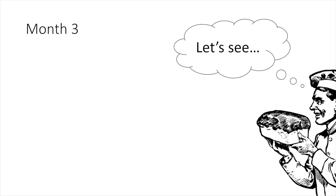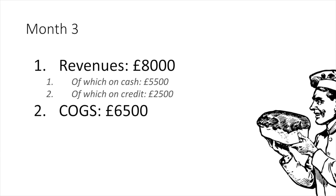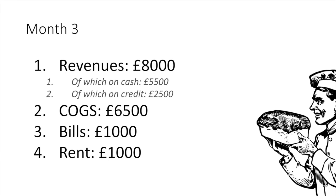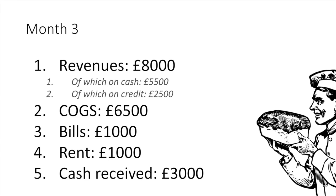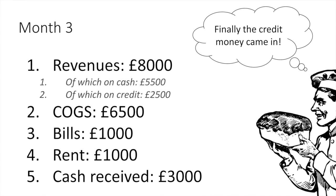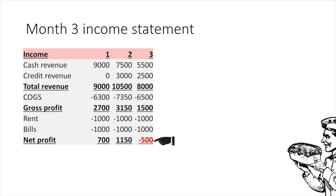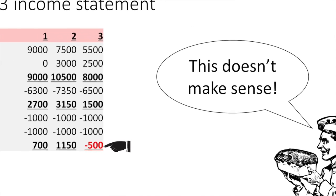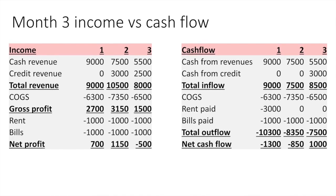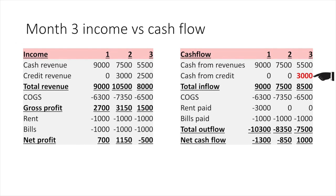In the third month, the business went down a little bit. Total revenue was £8,000 and the cost of goods sold was £6,500. The bills and rent are still the same as the previous month, but we have a new entry — John received the £3,000 cash from the credit sales of last month. The cash flow statement finally shows a positive number. But checking the income statement, this time it registered a loss. How can we make money and still have negative profit? The reason for this apparent paradox is that John received a lot of delayed cash from the second month in the third month — that's why the net cash flow was positive, even though the business lost money in its operations.